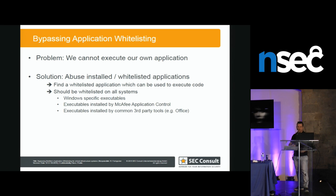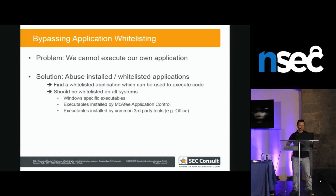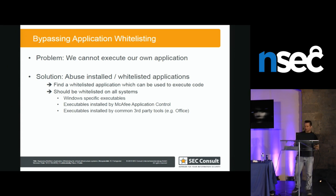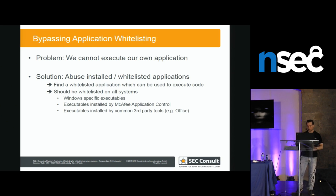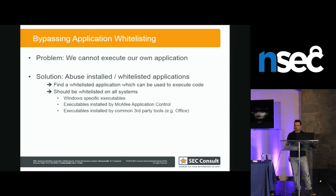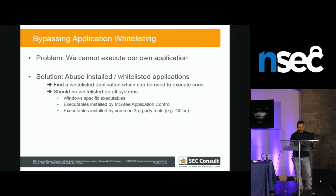The first idea: if we cannot execute our own applications and want to attack this, we abuse stuff that's already there — whitelisted on all systems — in three categories. First: things from the Windows operating system, present on every Windows Vista or Windows 10 system. Second: things installed by McAfee Application Control itself, since we know those applications are there. Third: common third-party libraries like Office, .NET Framework, Java, which are very frequently used. I found applications in all three categories that can be abused.